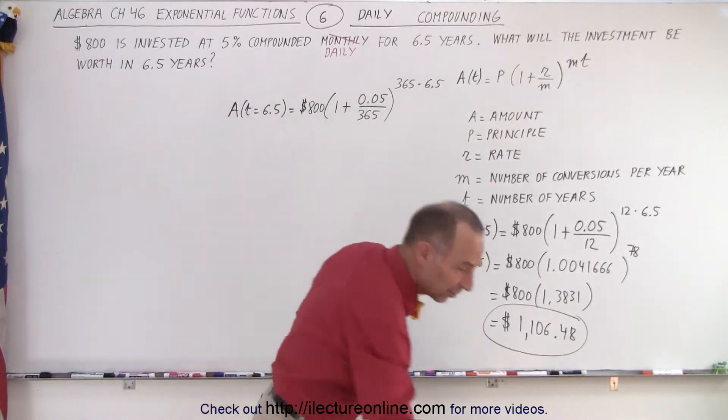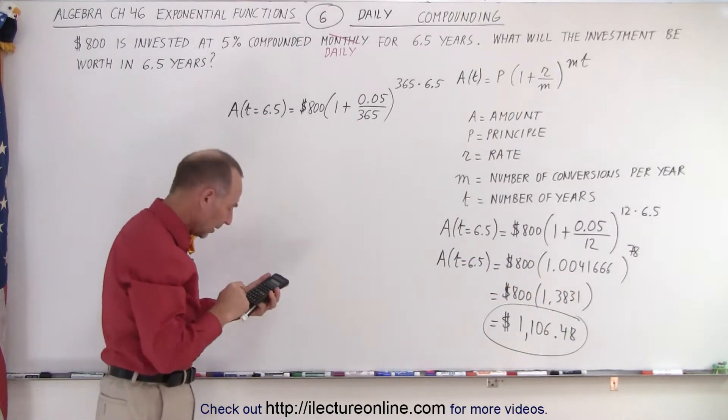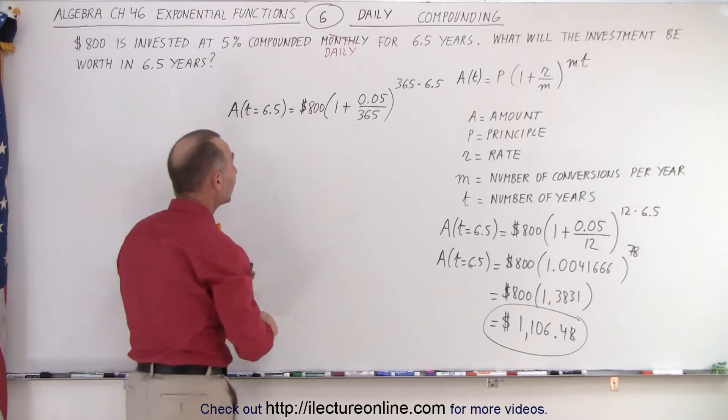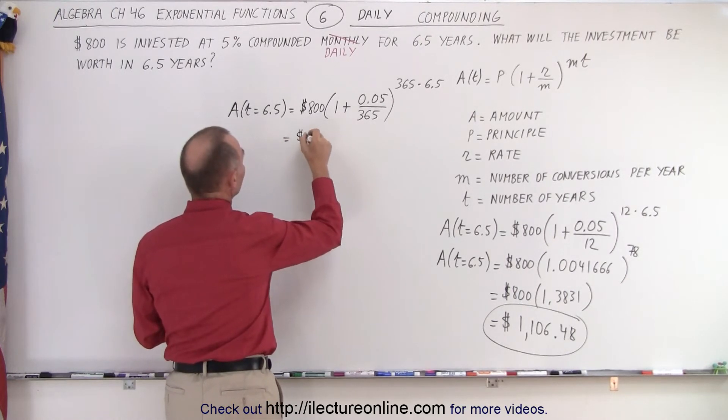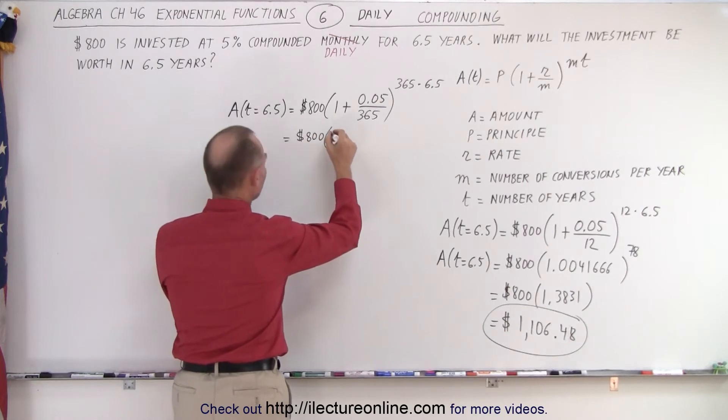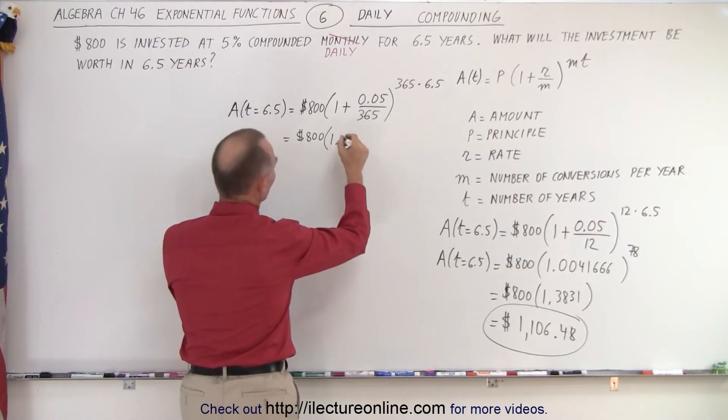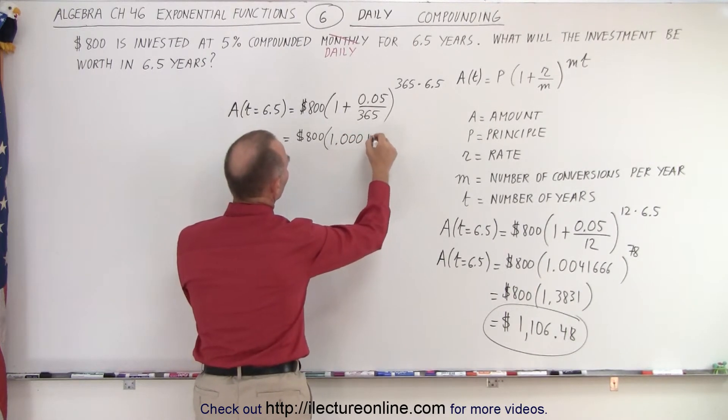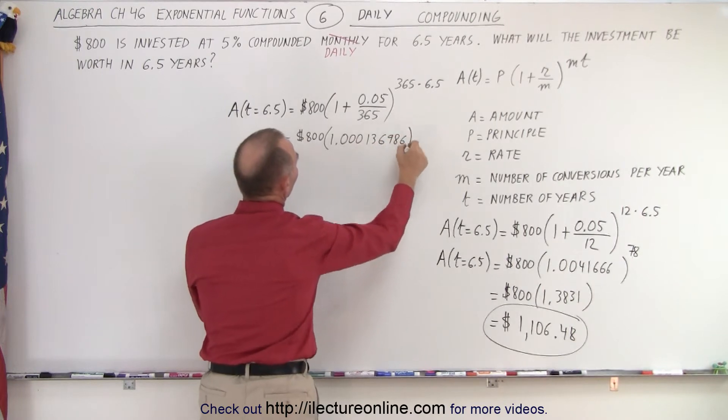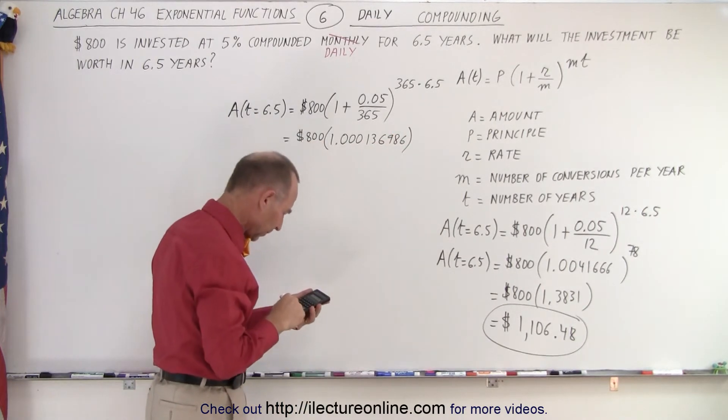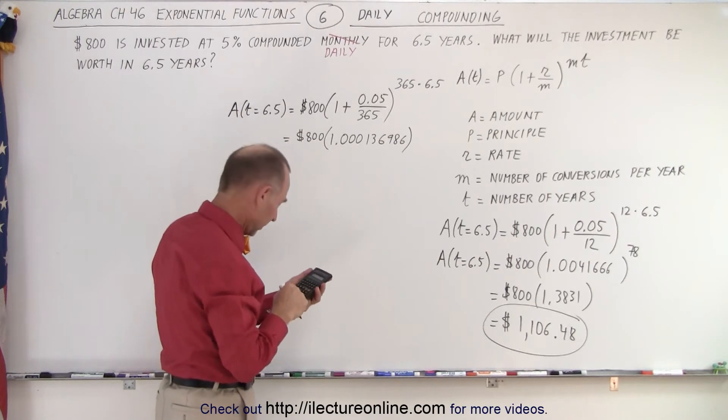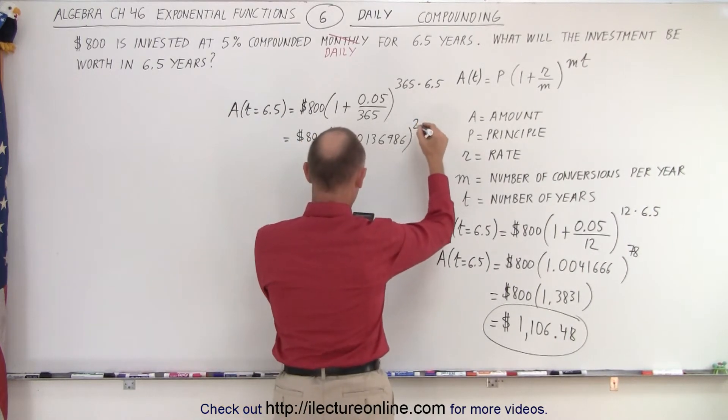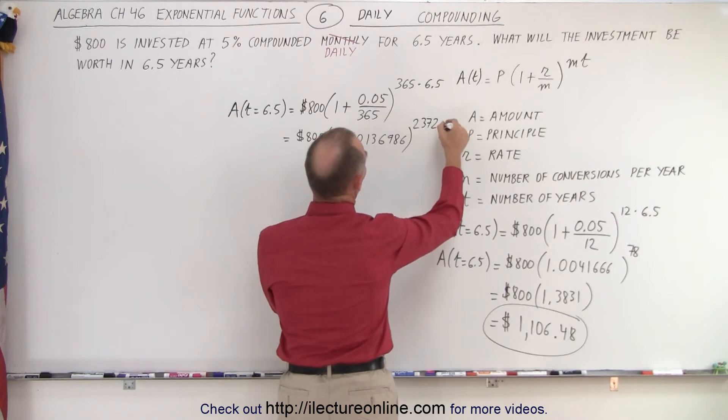Alright, let's see what that looks like when we calculate it. So you have 0.05 divided by 365 plus 1 equals, so what we end up with is we end up with $800 times 1.000, that's 3 zeros, 136986. 1, 3, 6, 986, and that's then raised to the exponent, 365 times 6.5, so it would be exponent 2372.5.